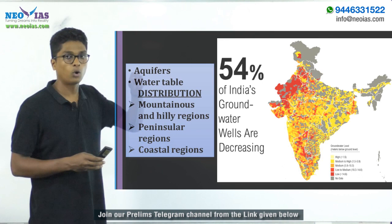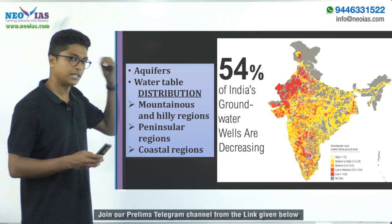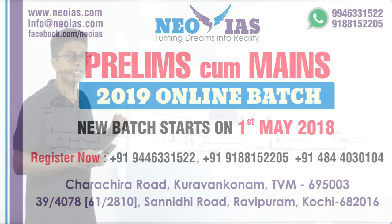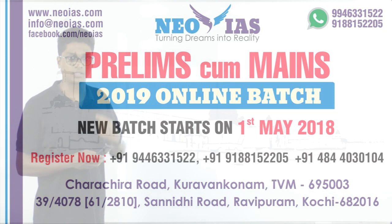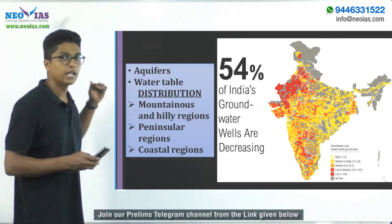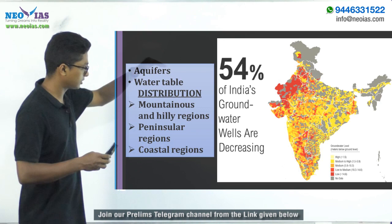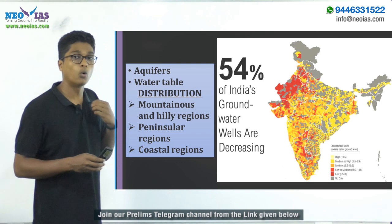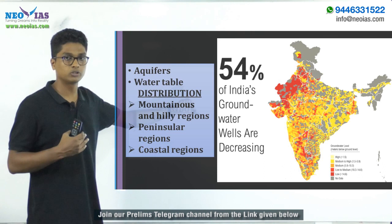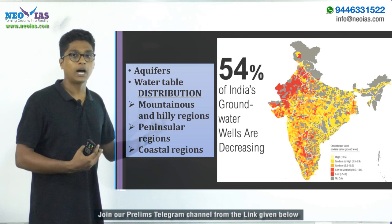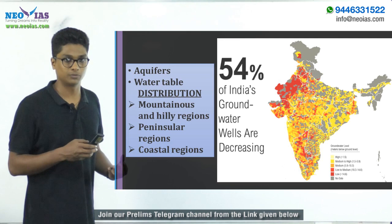In hilly or mountainous regions, surface water won't penetrate into the subsurface, so the amount of groundwater is generally less because water cannot seep underground. However, in valleys or plains — like India's northern plains — there is more groundwater. Water is carried from the Himalayas and the peninsular region into these plains, and it can seep underground, so the northern plains have more groundwater.